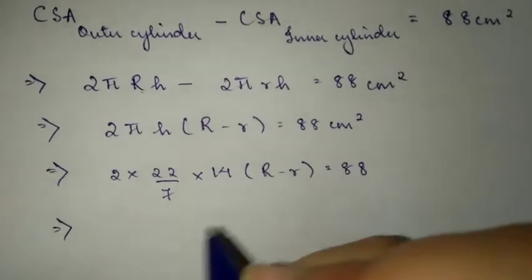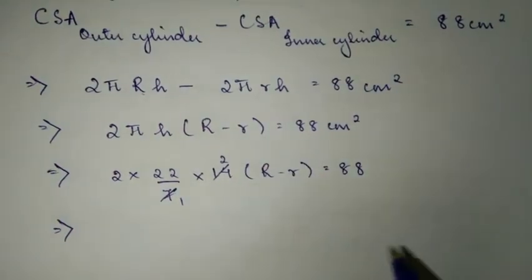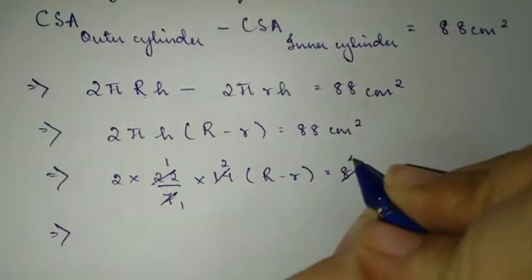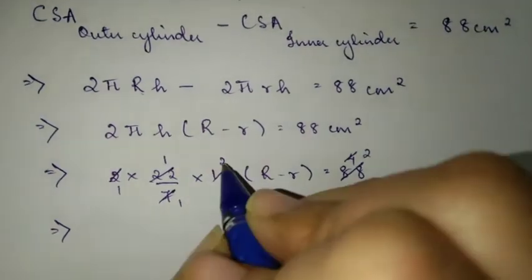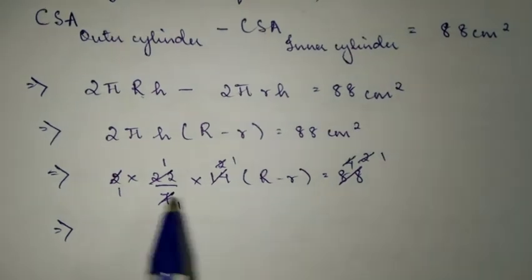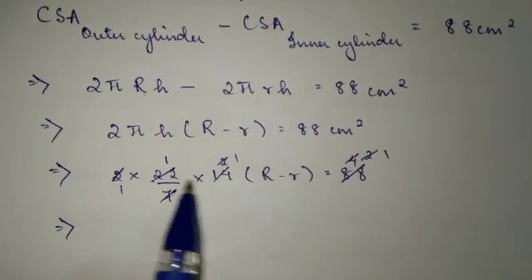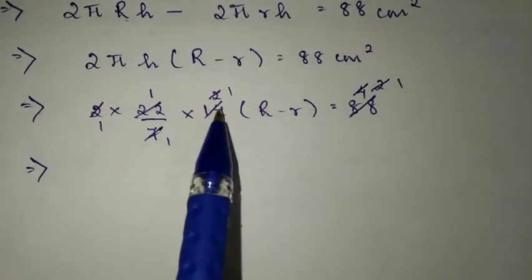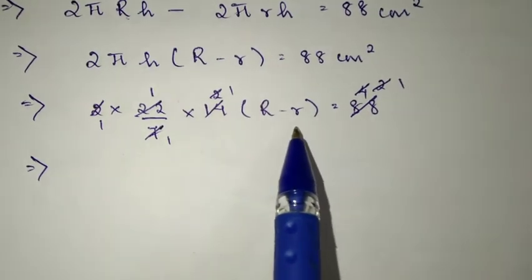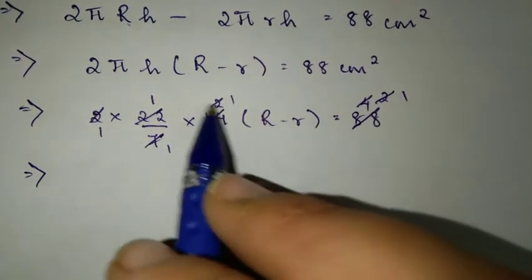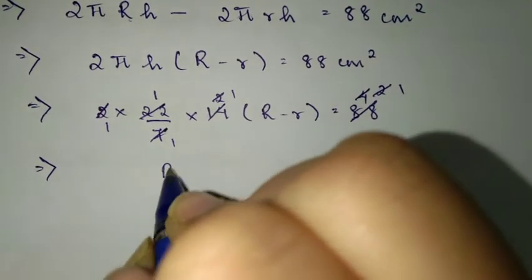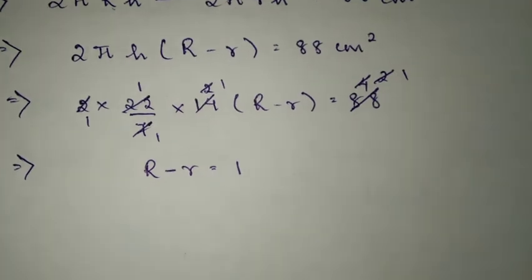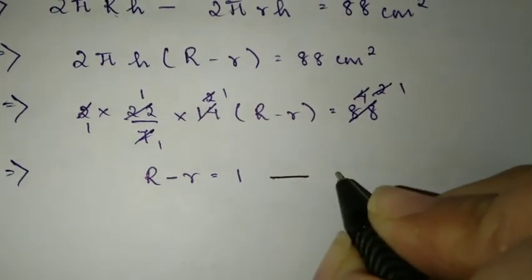If you cancel this, 7 into 14 gives 2, 22 into 88 divided by 22 gives 4, and we can simplify further. After dividing everything out, we get R - r equals 1. Let's say this is equation number 1.